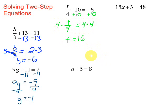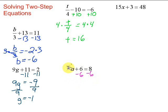Here we have negative a plus 6 equals 8. We want to work our way toward the variable, so we start by getting rid of the plus 6. To get rid of plus 6 we do the opposite: minus 6. Same thing on both sides. Then bring down what we have left — don't lose this negative, it needs to stay with the a. So we have negative a equals 8 minus 6, which is 2.